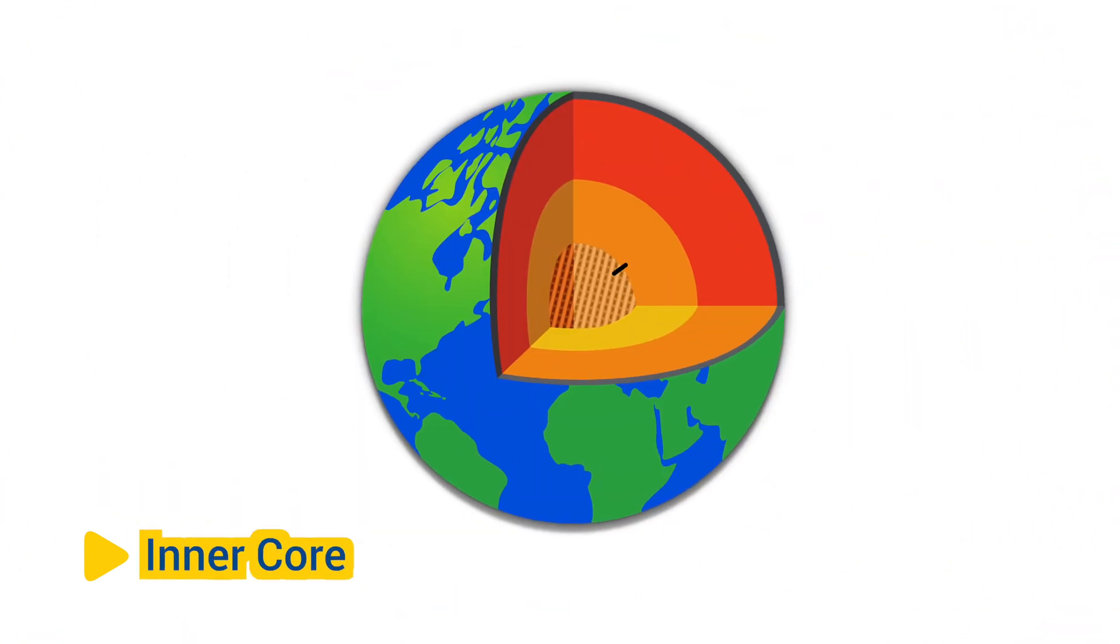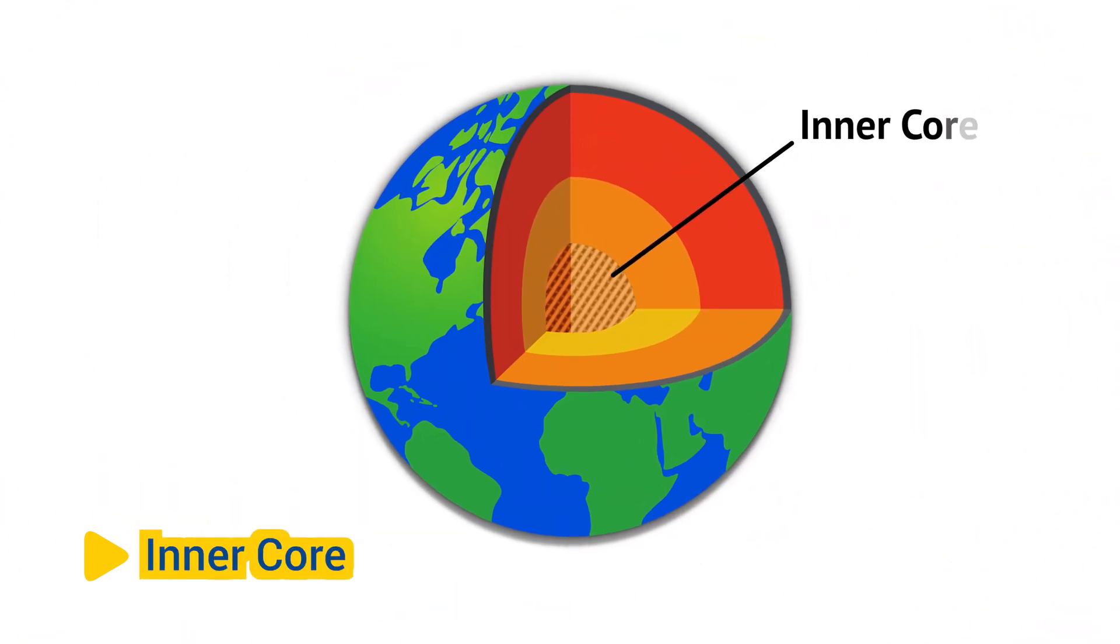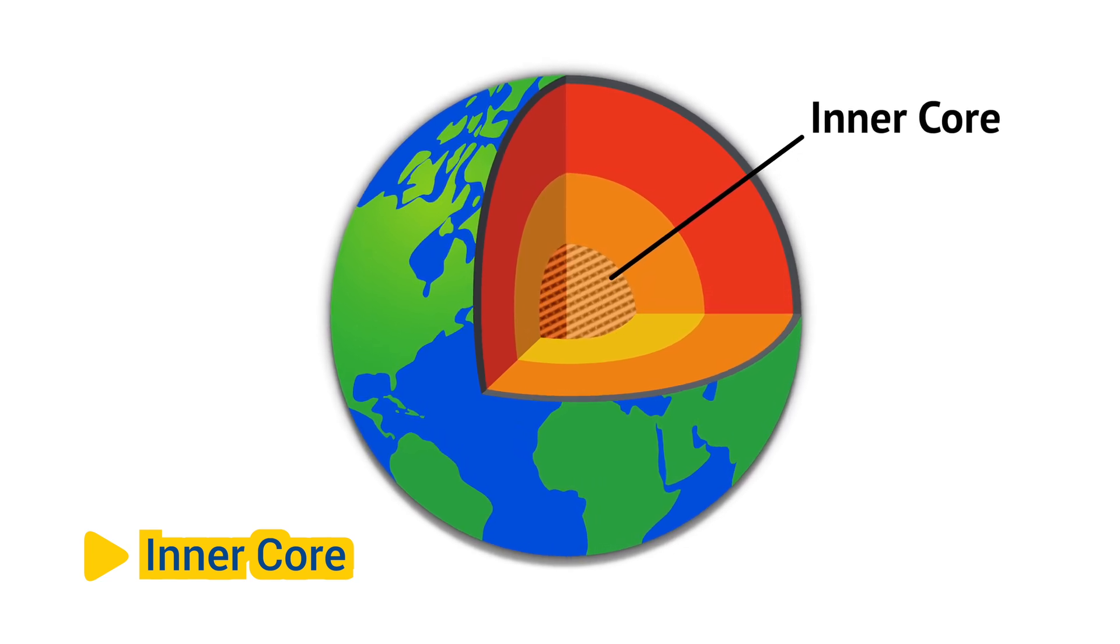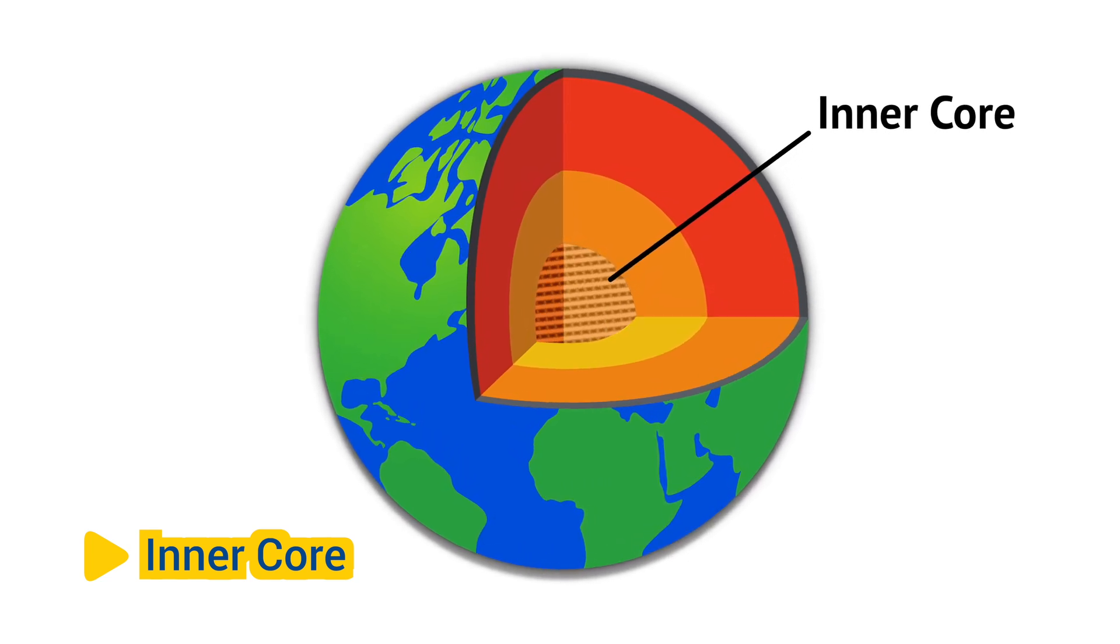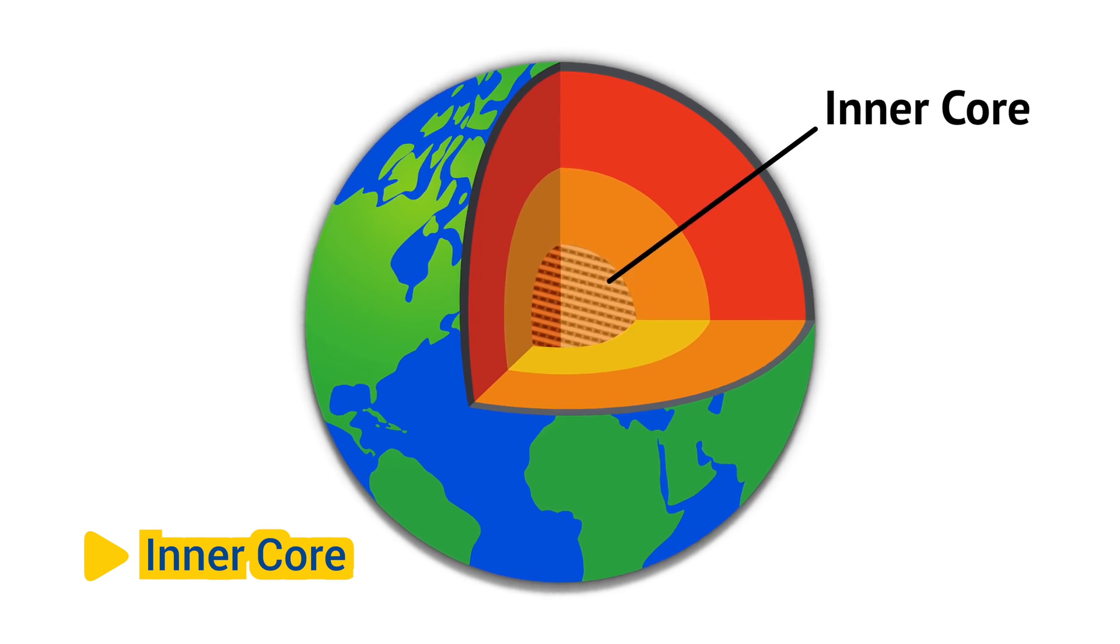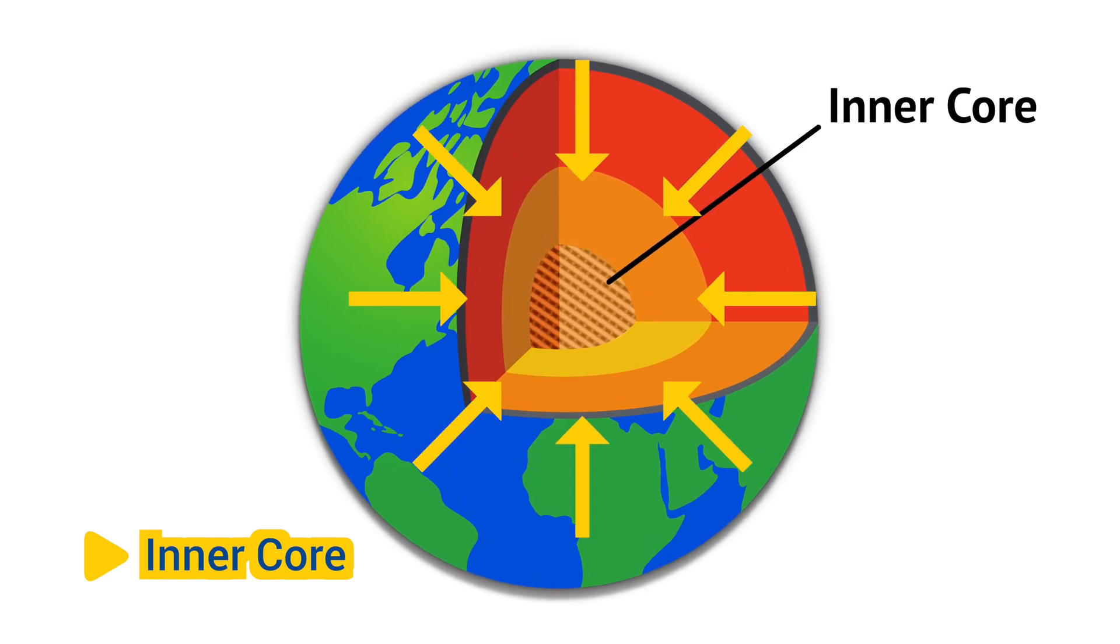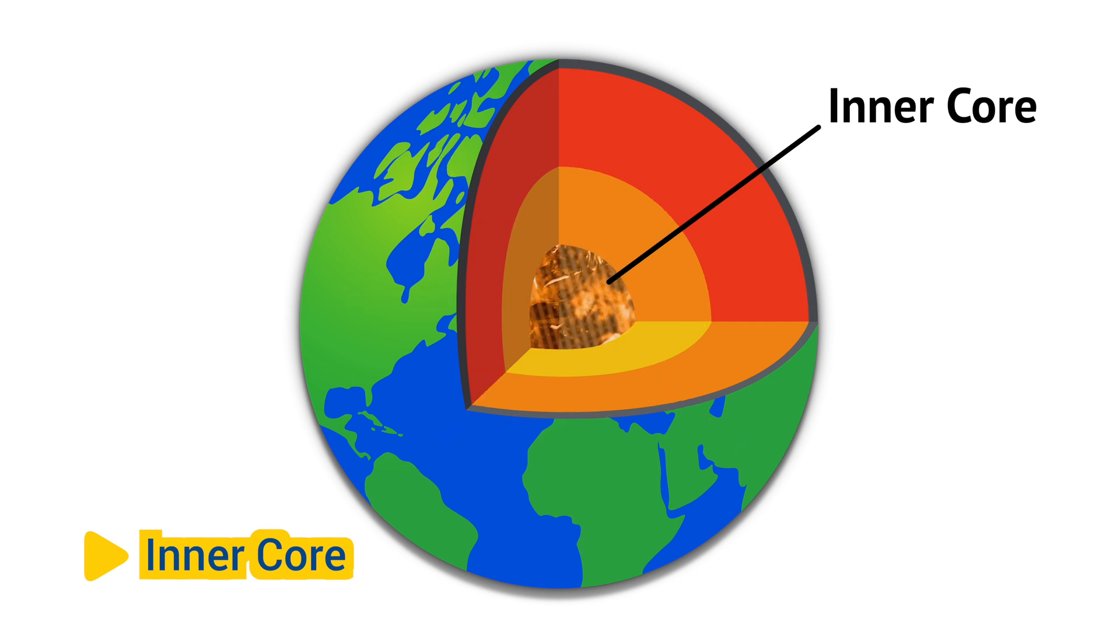Inner Core: At the center of the Earth lies the inner core, a solid sphere composed mainly of iron and nickel. Despite extreme temperatures and pressures, the inner core remains solid due to the immense pressure exerted by the surrounding layers. The inner core is thought to have formed as a result of the crystallization of molten iron-nickel alloys.